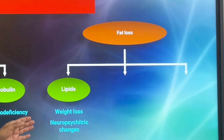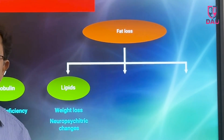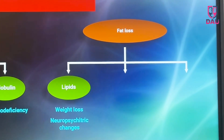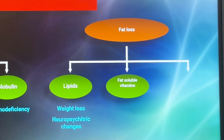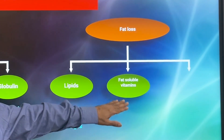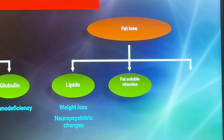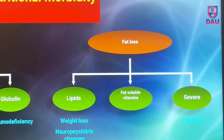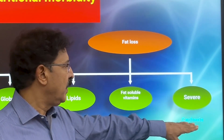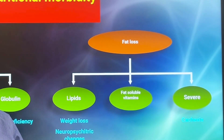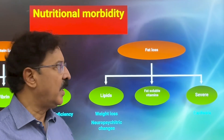Those patients who have chyluria for many months develop neuropsychiatric changes, because the brain needs cholesterol and lipids to function well. Due to this deficiency, the neurons suffer. Patients also lose fat-soluble vitamins, leading to deficiencies of vitamin A and vitamin D. When fat loss is very severe and continuous, patients become almost cachexic. I have seen very moribund patients as a result of chronic persistent chyluria.